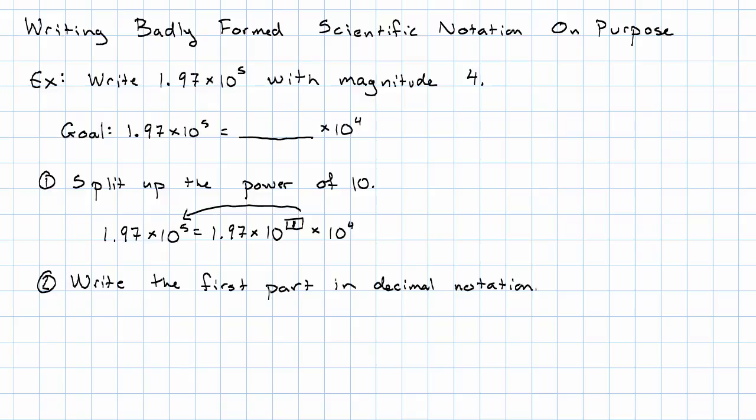And then we write the part before the 10 to the 4th in decimal notation. So 1.97 times 10 to the 1. That's 1.97. Move the decimal point one place to the right. That's 19.7. So 1.97 times 10 to the 1 times 10 to the 4th is 19.7 times 10 to the 4th. So if we really wanted to, we could write this as 19.7 times 10 to the 4th. We will see a reason that we want to do that in the next video. Thank you guys.